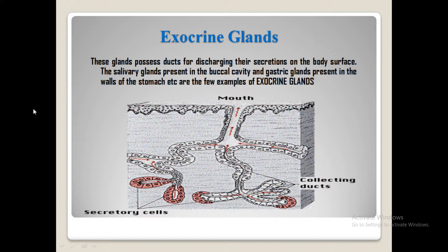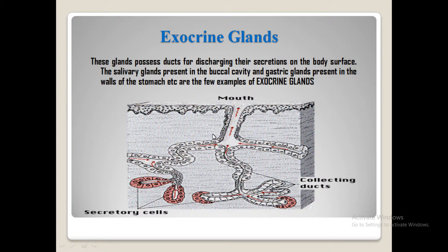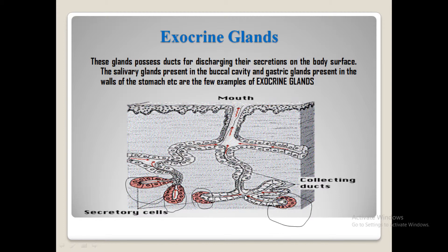First of all, we will look at the exocrine glands. Exocrine glands secrete and discharge through ducts. Now let's talk about salivary glands as an example. You can see on your computer screen the salivary gland, which produces saliva. The saliva travels through the salivary ducts to the mouth.